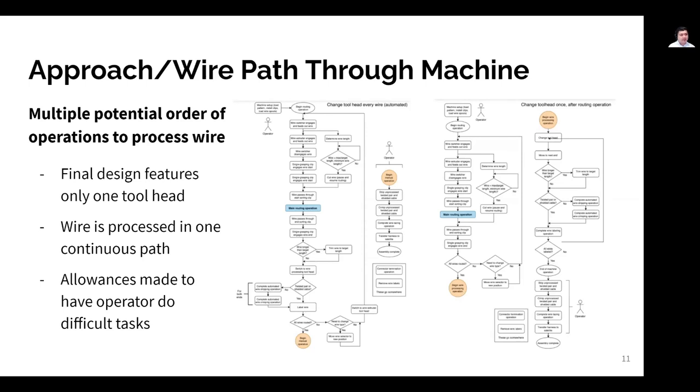One of the primary motivations for choosing this design was to circumvent the problems associated with robotic manipulation of wires. In this design, the wire is processed in one continuous path from the spool to the extruder, as shown in the left flowchart, which means that we avoid having to re-grip or reposition the wire any more than we need to. However, we did identify some tasks that we considered too difficult to complete with the resources and time we had available, and so we made the allowance with our sponsors' approval to have the human operator take care of these tasks, including handling shielding cables and twisted pairs.